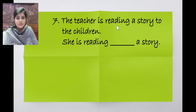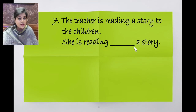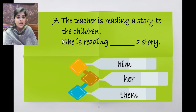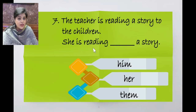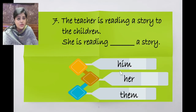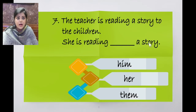Mr. Shah is reading a story to the children. The teacher is reading a story to the children. She is reading dash a story. To whom is she reading? She is reading to the children. For children, you use them. She is reading them a story.